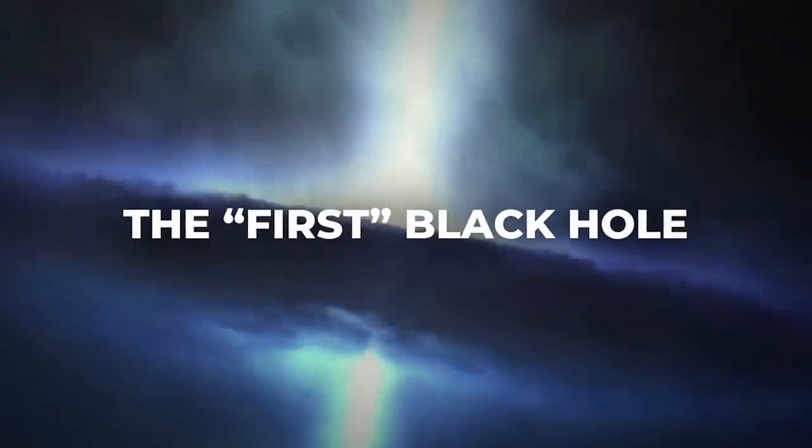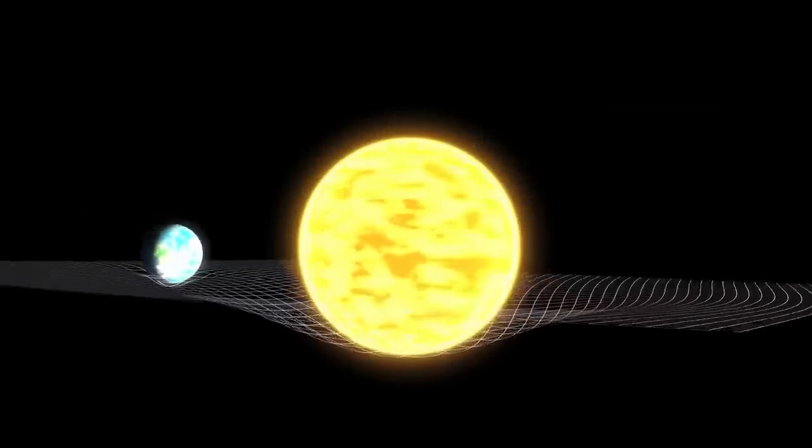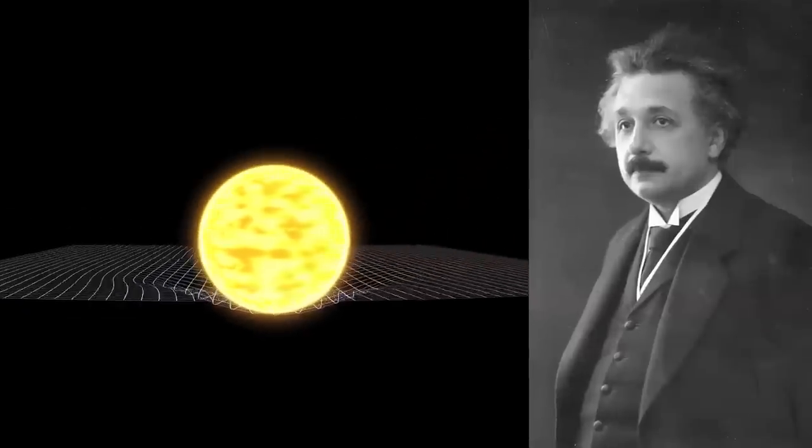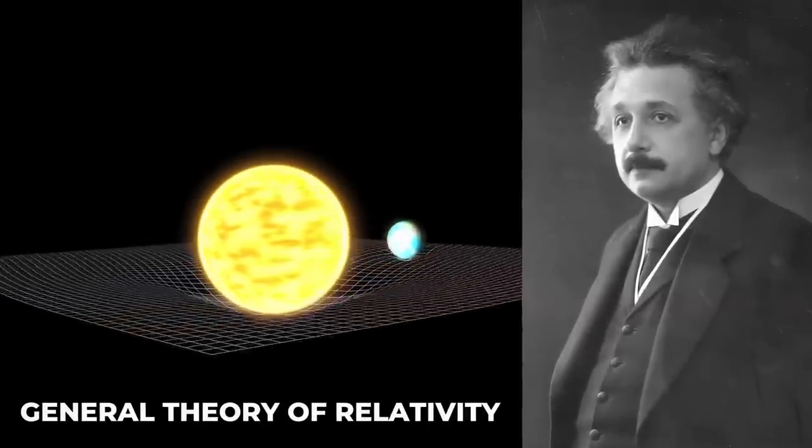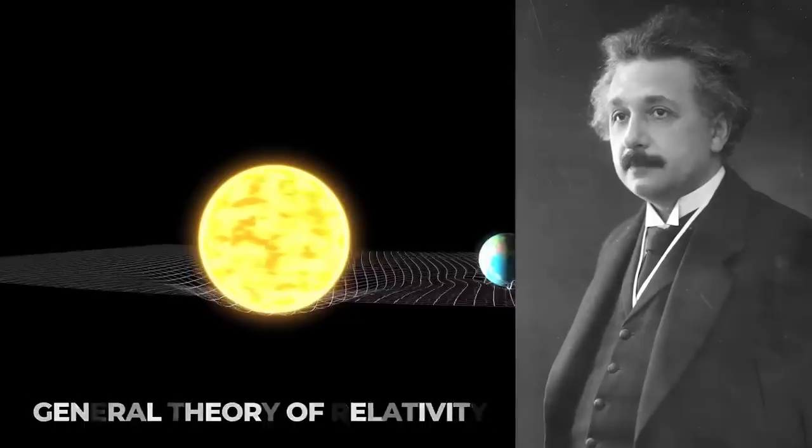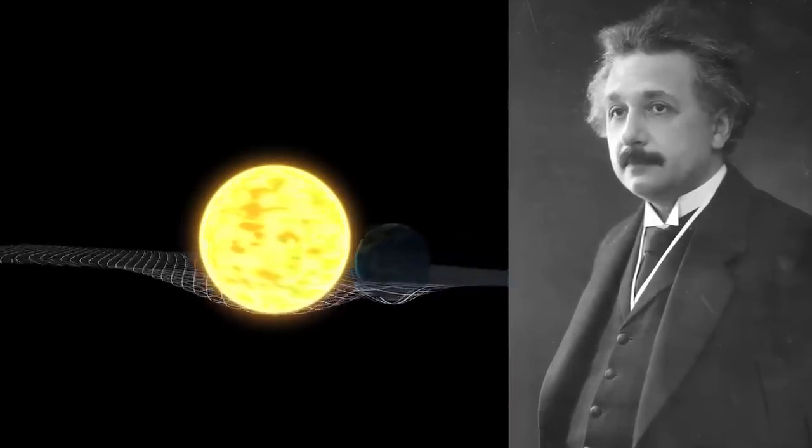It all started in 1916 with Albert Einstein's general theory of relativity. He was the first person to predict that they even existed, although the official name black hole came around 50 years later.